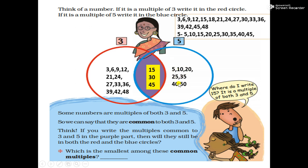The multiples of 5 we write over here. Some numbers are multiples of both 3 and 5, so 15, 30, 45 are the common multiples of 3 and 5, and we can say they are common to both 3 and 5. Think: if you write the multiples common to 3 and 5 in the purple part, will they still be in both the red and blue circles? Yes, because 15 is a multiple of 3 and also a multiple of 5. 30 is a multiple of 3 and also a multiple of 5. These are the common multiples also. Which is the smallest among these common multiples? 15.